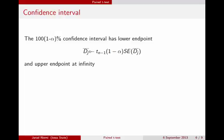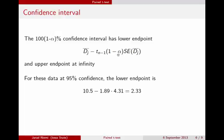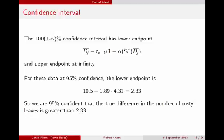But now, instead of having a plus-minus symbol here, we only have a minus, and instead of having alpha over 2, we just have the 1 minus alpha cutoff. So again, we'd go and look at this cutoff, and we would construct our confidence interval, and the lower endpoint would be 2.33. So that means we can say we are 95% confident that the true difference in the number of rusty leaves is greater than 2.33.